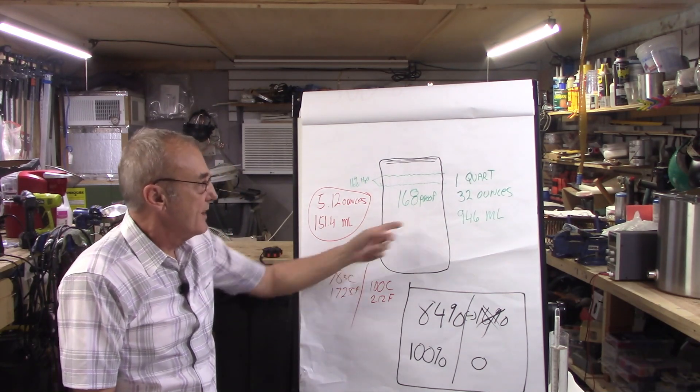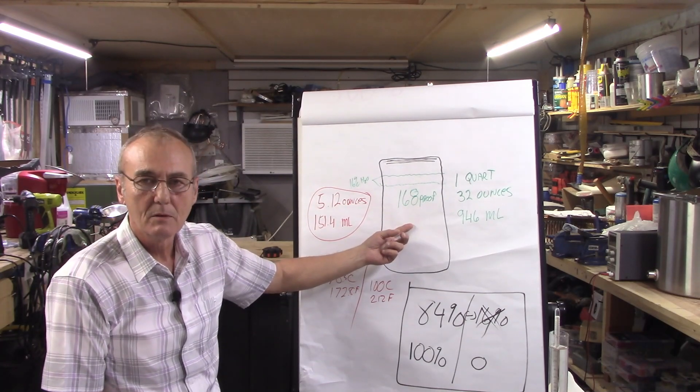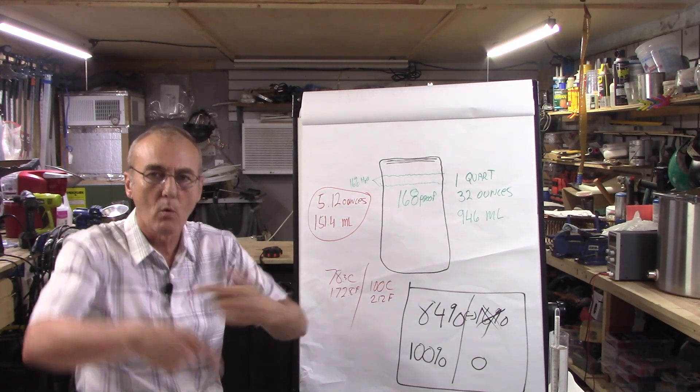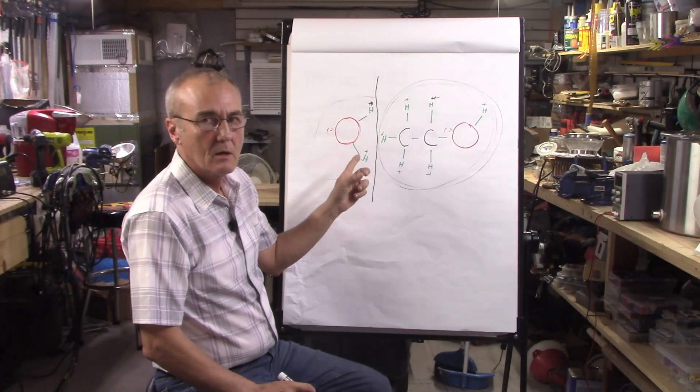We know that if we heated this up, we would surpass this temperature, which means that the ethanol would leave, and we don't want that to happen. So we've got to work it backwards.